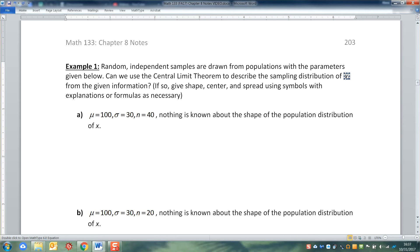Can we use the Central Limit Theorem to describe the sampling distribution of x bar from the given information? And if so, give the shape, center, and spread using symbols or explanations or formulas if necessary. So looking at this first part, it says that μ = 100, σ = 30, and n = 40. And nothing is known about the shape of the distribution of this population.